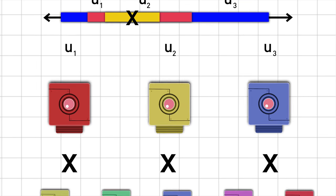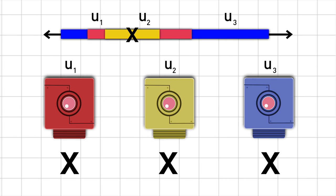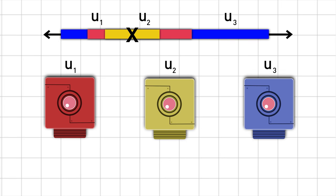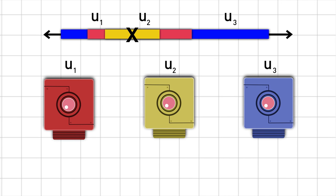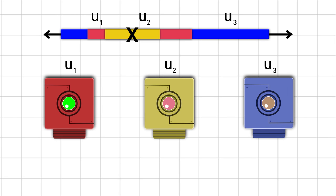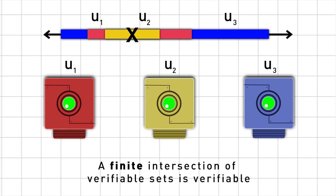But what if we intersect only finitely many of them? Is the result verifiable this time? Sure. We just have to wait for all of the machines to stop running. This may take a while, but we can verify that they will all terminate eventually. So the finite intersection of verifiable sets is verifiable. This is observation number two.